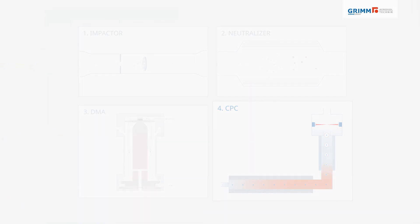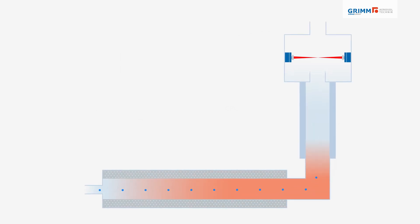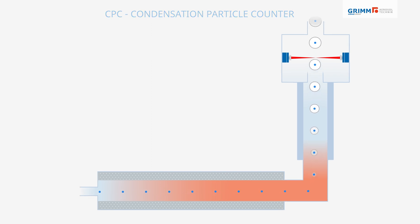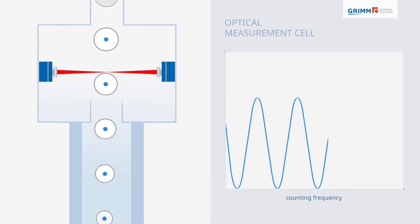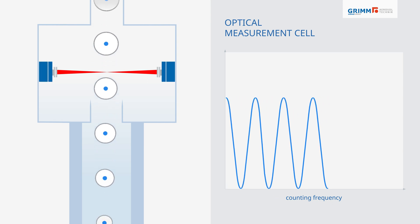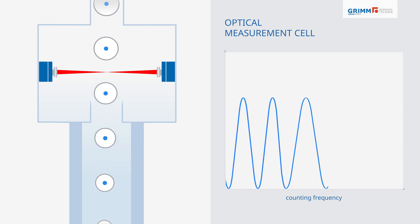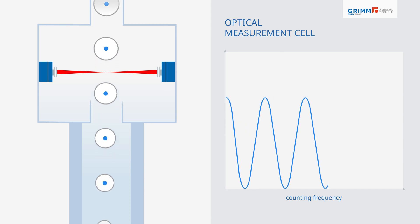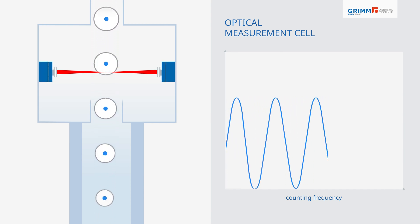Known particle sizes exit the DMA and enter the CPC. A condensation process enlarges all particles to a detectable size. The particles are then counted in the optical measurement cell. With a constant volume flow, the frequency of detected particles results in the number concentration as particles per cubic centimeter.